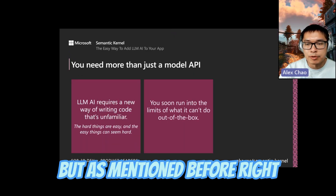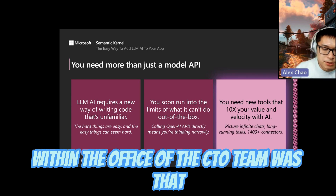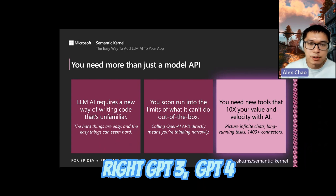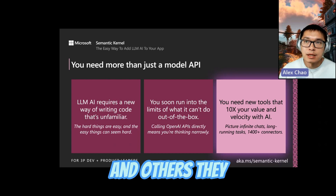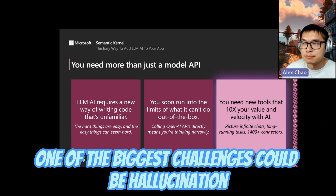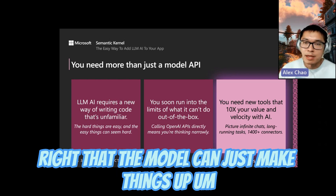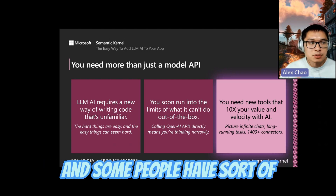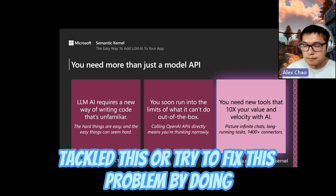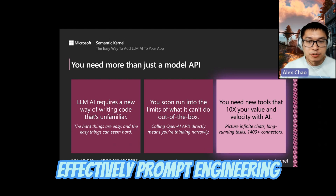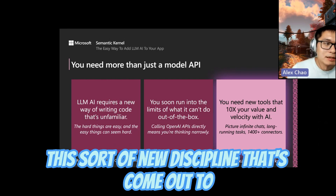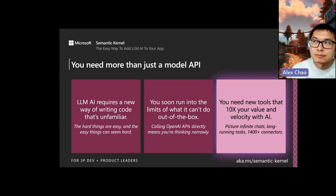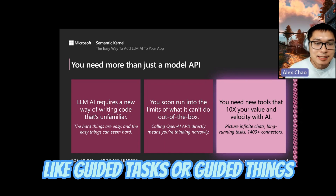What we found within the Office of the CTO team was that while these models — GPT-3, GPT-4, and others — are certainly super powerful, they can introduce challenges. One of the biggest is hallucination: the model can just make things up and not be grounded in what you actually want. Some people have tackled this through prompt engineering, a new discipline that helps steer large language models toward more guided tasks.